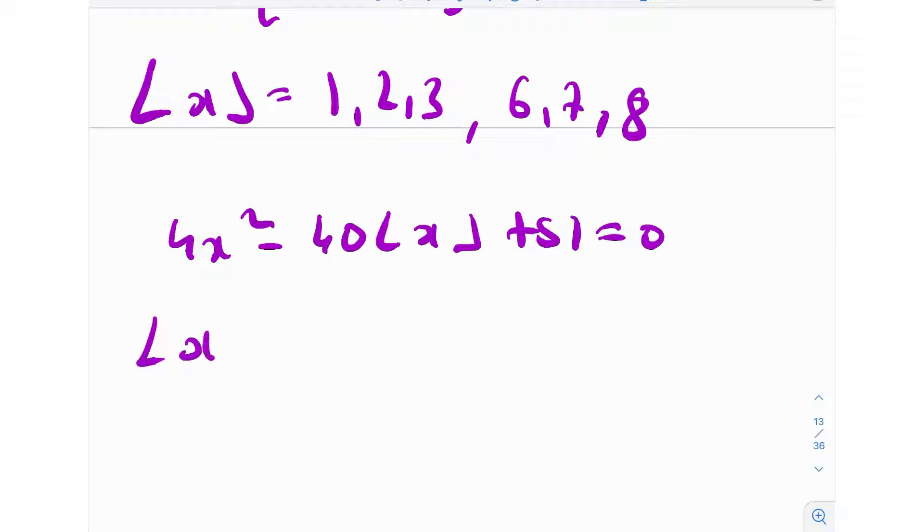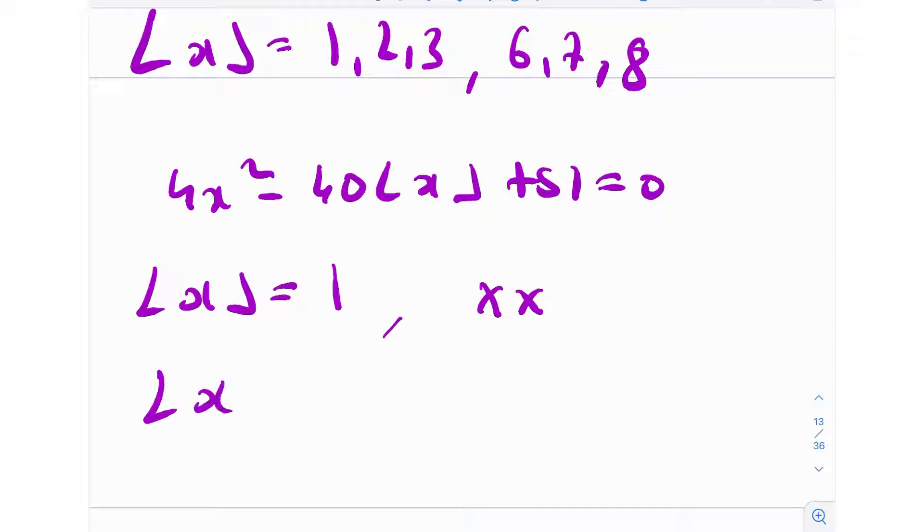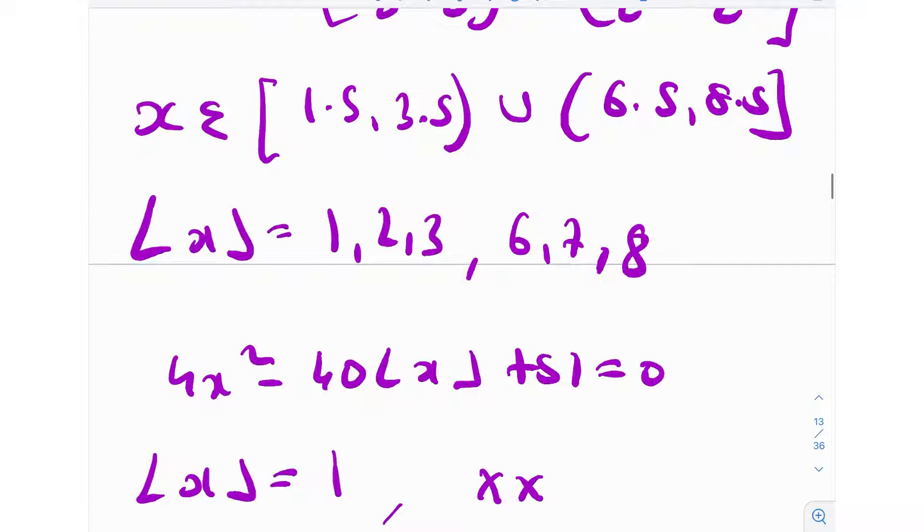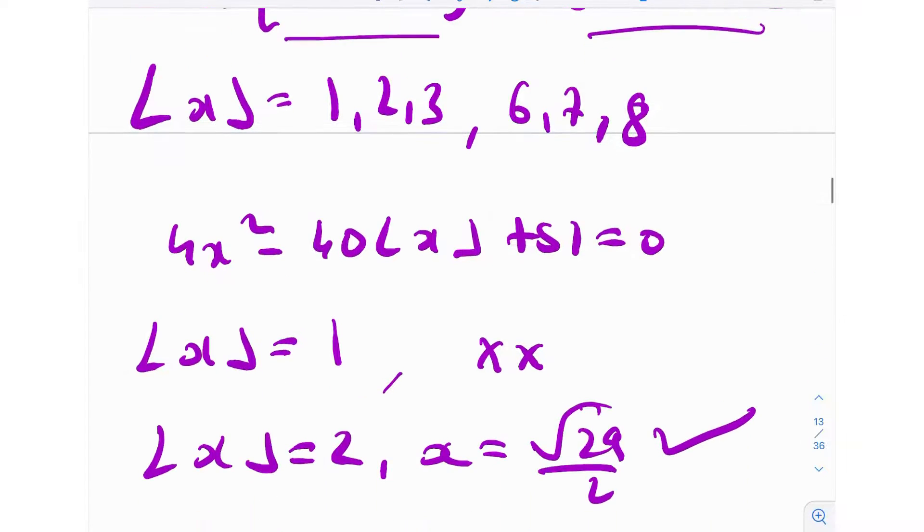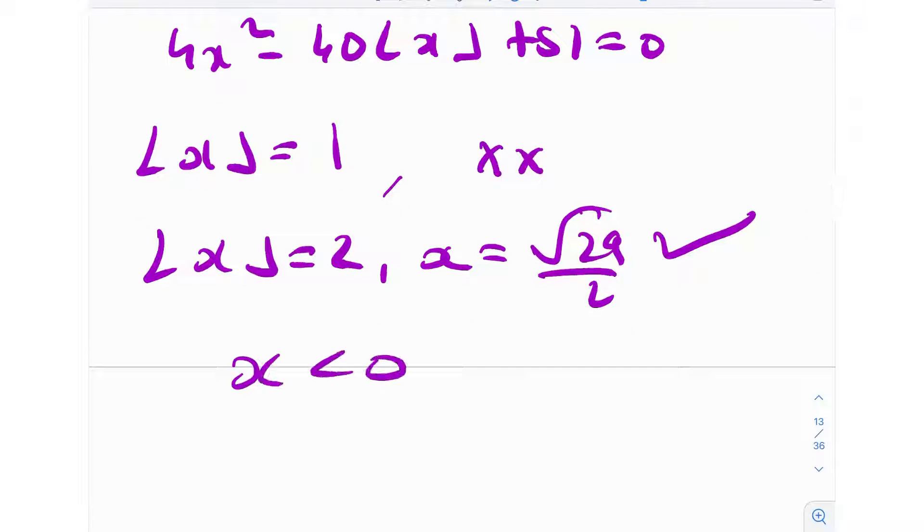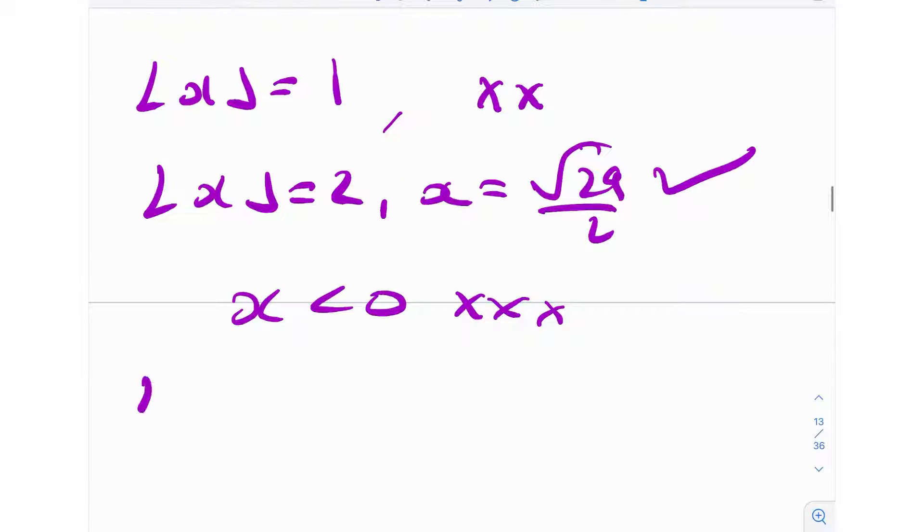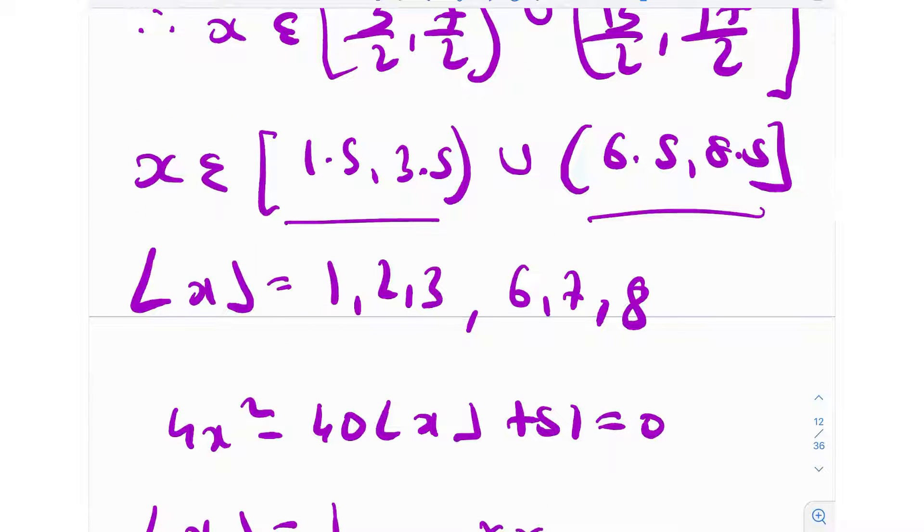Case 1 is obviously when the greatest integer of x is 1, and you get no solution. After that, we have greatest integer of x is 2. You get x = √29/2, which is a valid solution. You also get -√29/2 because it's a quadratic. However, I'm excluding that because negatives are not in our range of values of x. So x cannot be negative. If you ever see x is less than 0, you can immediately reject that. The third would be when the floor of x is equal to 3. Here, you get x = √69/2 and correspondingly -√69/2. However, √69/2 does not fall in the range of values of x that we need. It's something 4 point something, and 4 point something is clearly out of the interval.